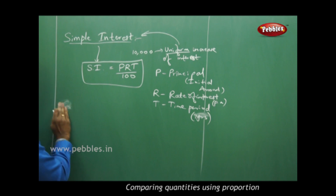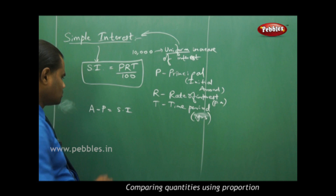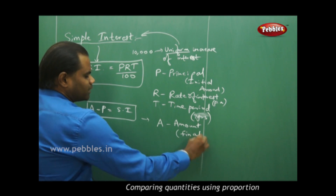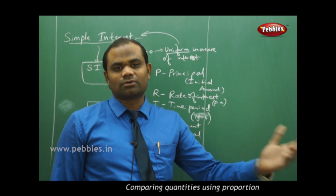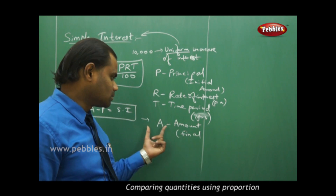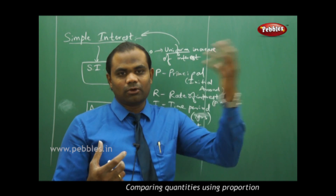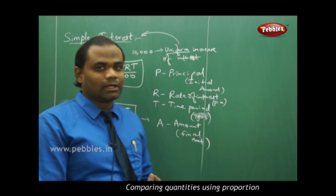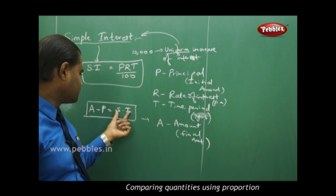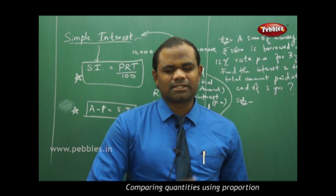We also have the formula: Amount minus Principal equals Simple Interest, i.e., A − P = SI. Here A is the final amount — for example, the amount drawn from the bank after several years — and P is the initial amount deposited. The difference between the final amount and the principal is the interest. So SI = A − P and SI = PRT / 100 are the two basic formulae used in solving simple interest problems.